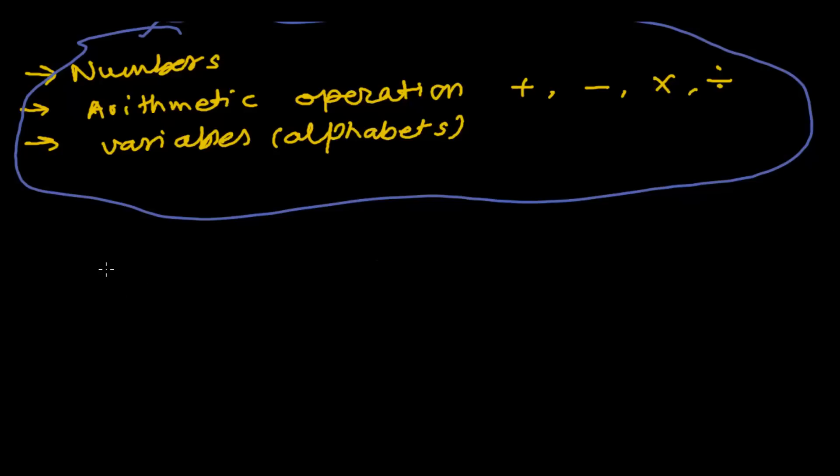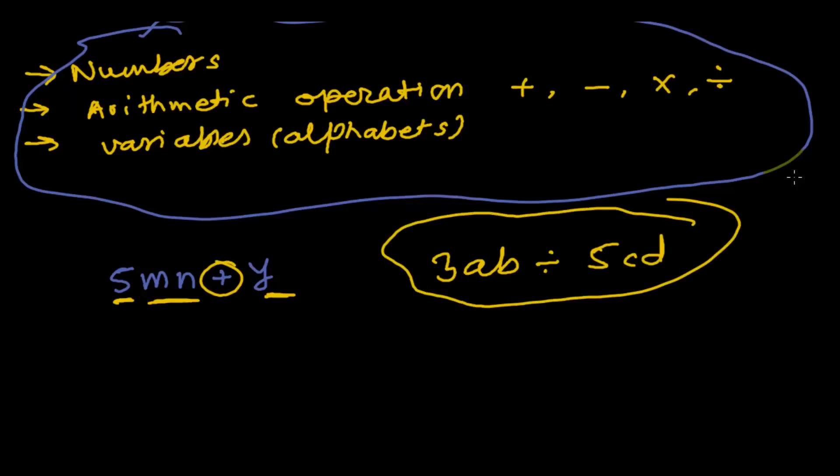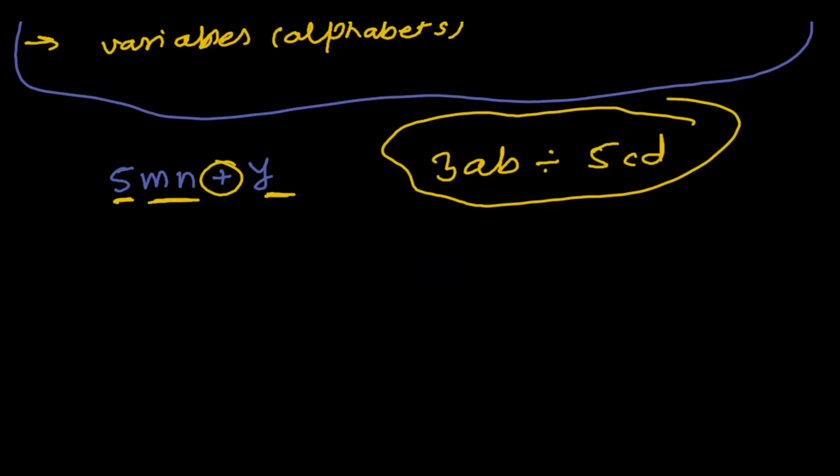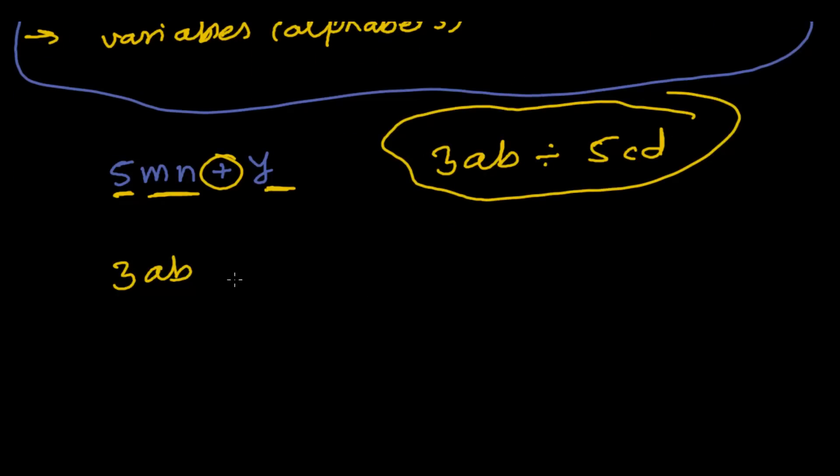Just tell me whether this is an algebraic expression or not: 5mn plus y. Of course, this is an algebraic expression. Why? Because 5 is a number, these are alphabets - maybe these are variables - and there are operations, of course arithmetic operations. Sometimes you'll get like 3ab divided by 5cd. These are all algebraic expressions.